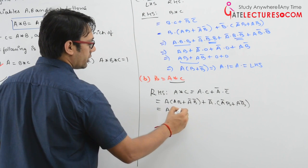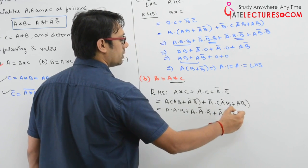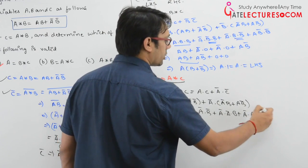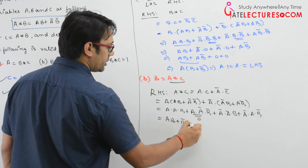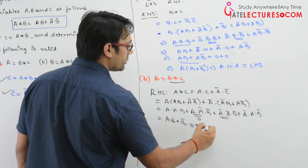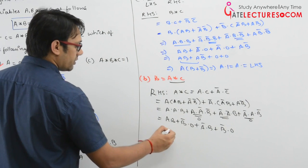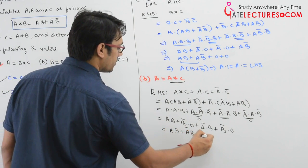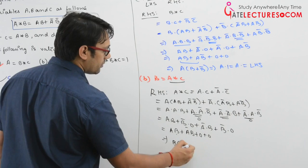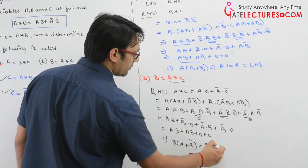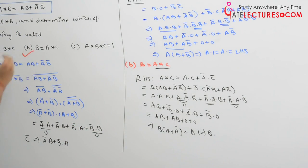This gives: ab + 0·b' + a'b + 0, since a·a' = 0. So we have ab + a'b. Taking b as common: b(a + a') = b·1 = b. This equals the left-hand side, so the second part, b = a★c, is also valid.